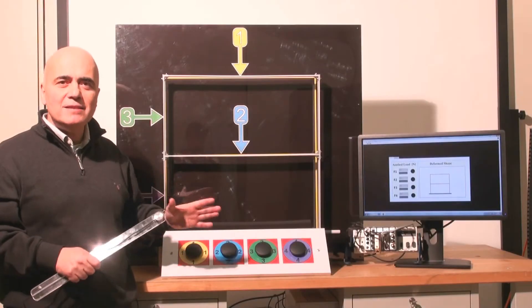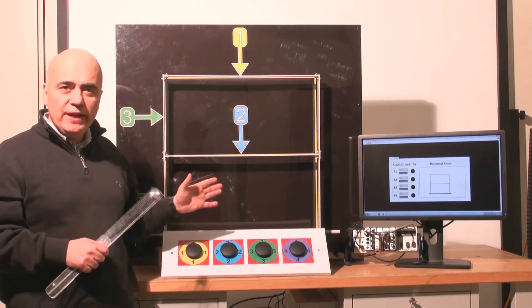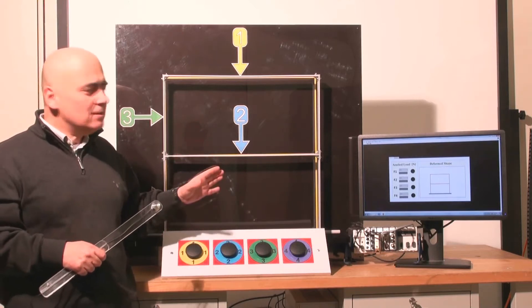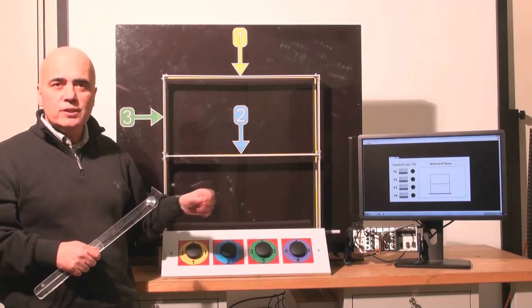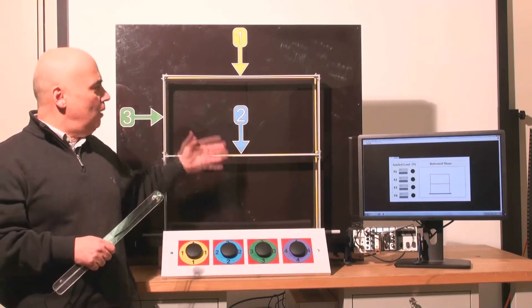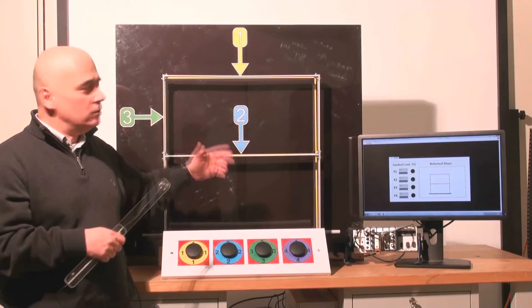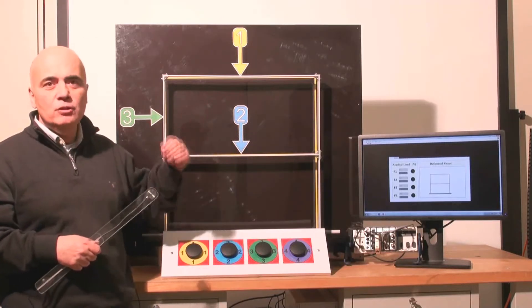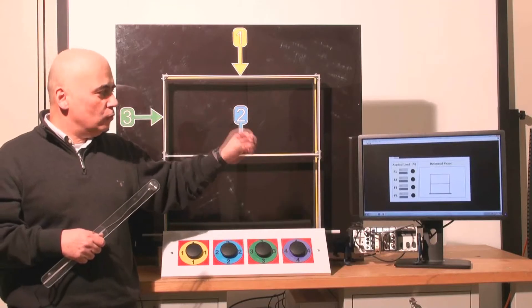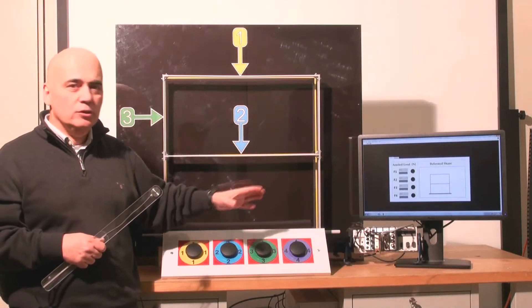This is a model of an elastic two-story frame which has been designed by us to show students and untrained people how an elastic frame with elements subject to flexure deforms and how this deformation can be predicted through a linear elastic calculation.